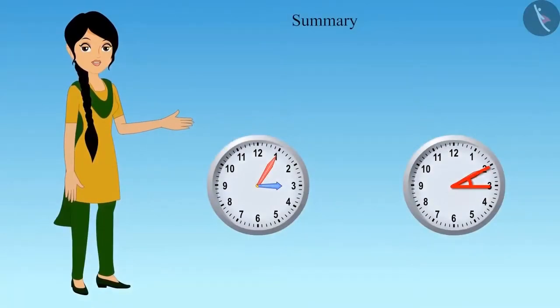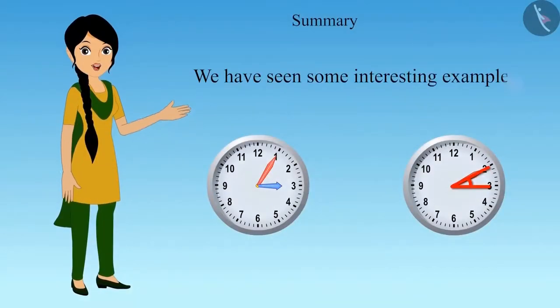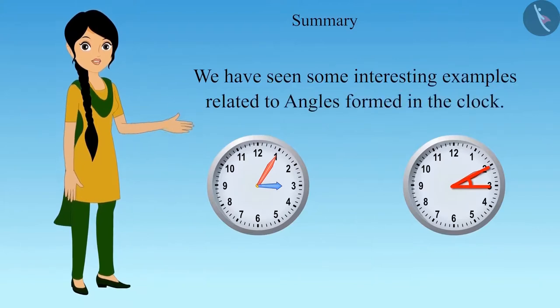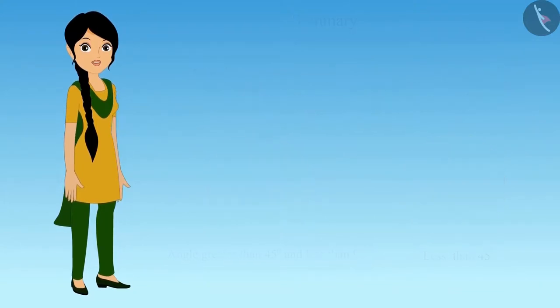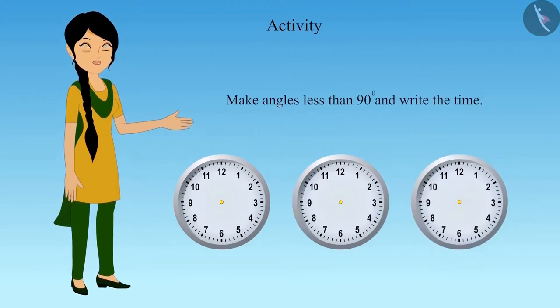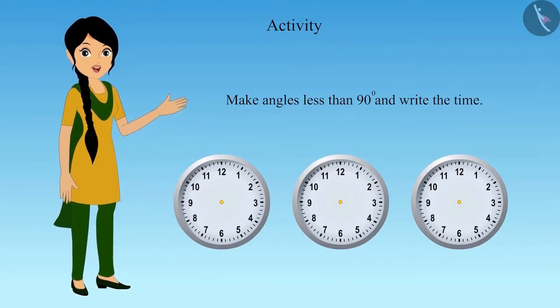So, children, in this video, we have seen some interesting examples related to angles formed in the clock. Now, you make 3 clocks in your notebook and mark 3 angles less than 90 degrees in it. Write the time along with it. You can seek the help of your friends and teachers in this activity.